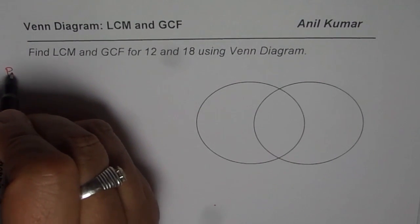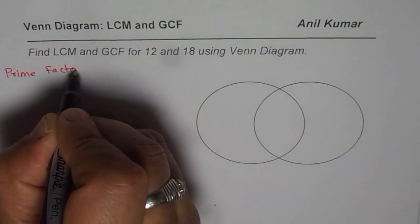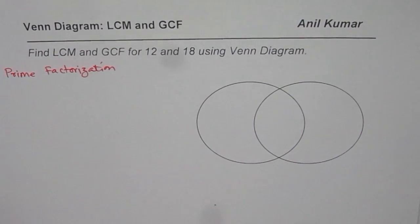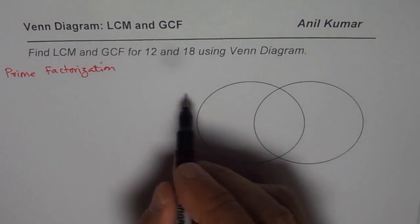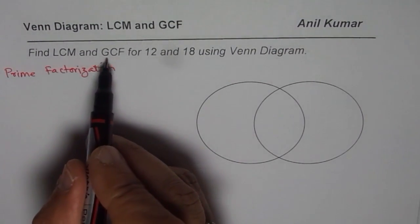First is we will do prime factorization. And once we have done the prime factorization we will see how to use the Venn Diagram to find LCM and GCF.